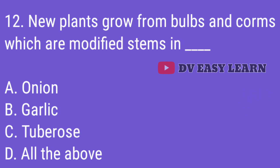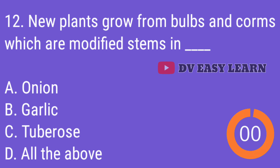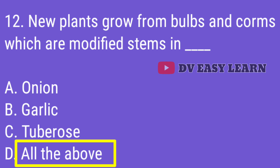Question 12. New plants grow from bulbs and corms, which are modified stems, in? Correct answer: All of the above — Onion, Garlic, and Tuberose.